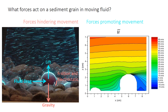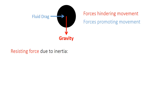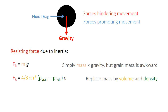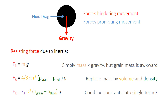For simplicity, we'll consider just the two major forces: gravity and fluid drag. Gravity is inertia — a resisting force that must be overcome for the particle to move. It is simply the mass of the particle times the gravitational acceleration g. Since we typically think about sediment in terms of size, we can replace that mass term with volume times density, where volume of a sphere is 4/3 π r³ and grain density is ρ. We can bundle the constants and use particle diameter d instead of radius. From this equation, you can see that the larger and denser the particle is, the more inertia it will have and the harder it will be to move.